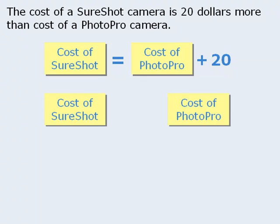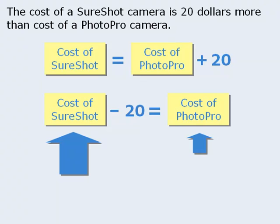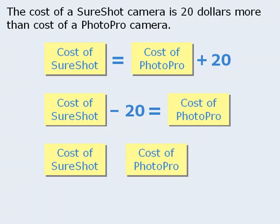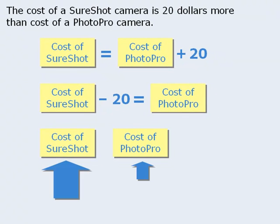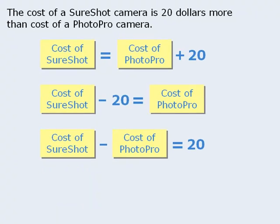There's another way to write an equation using the cost of both cameras. Since the cost of the SureShot is $20 more than the cost of the PhotoPro, we can take the cost of the SureShot and reduce it by $20 to make the two sides equal. Alternatively, we can write: cost of SureShot minus cost of PhotoPro equals $20. As you can see, there are several ways to write equations based on the same information.